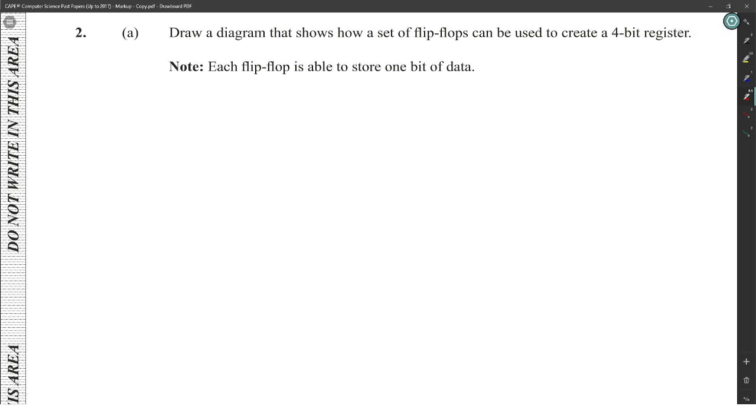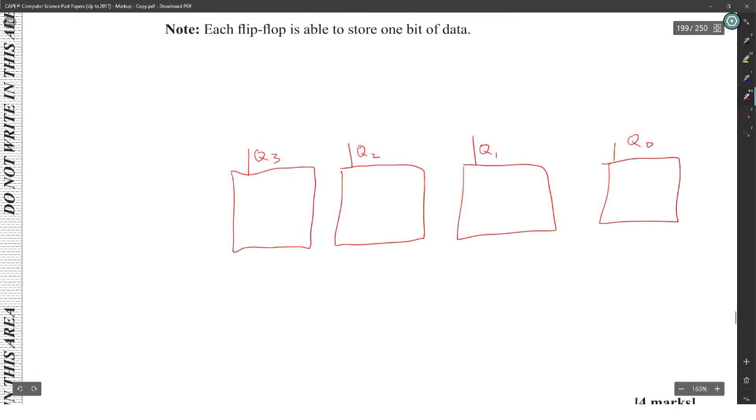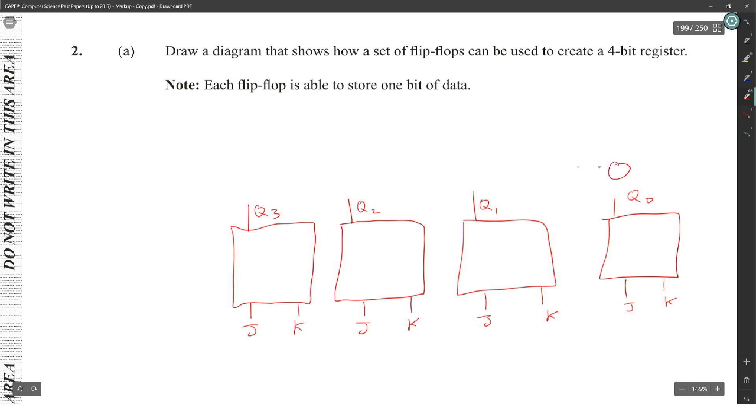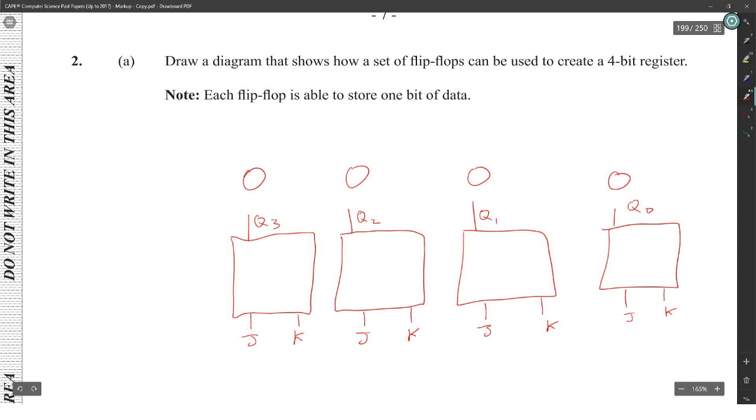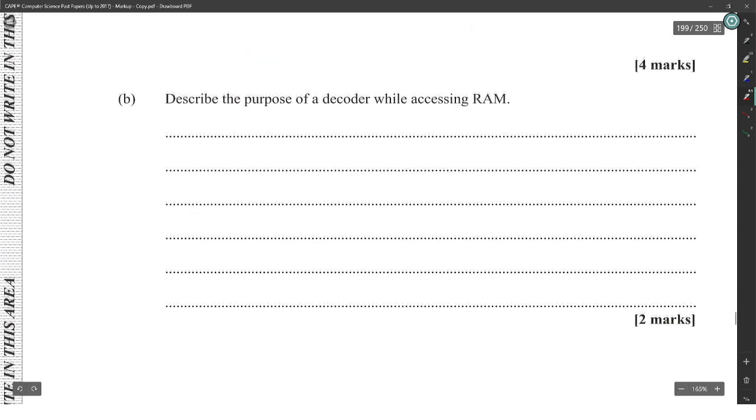Draw a diagram that shows how a set of flip-flops can be used to create a four-bit register - each flip-flop is able to store one bit of data. You're going to take our flip-flops and put four of them here, and the output will be Q0, Q1, Q2, Q3. Whatever type of flip-flop you use doesn't matter - you could put JK flip-flops. A flip-flop holds one bit of data, so for four bits of data you just put four flip-flops next to each other. You could go from zero to three in either direction - either way would be okay.